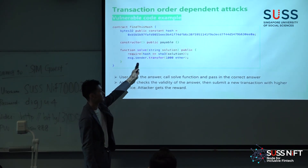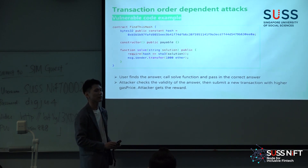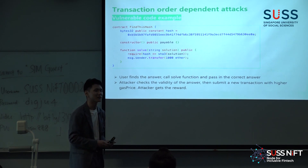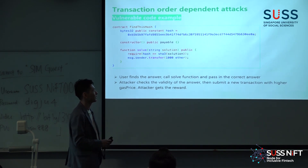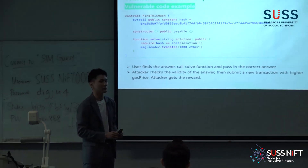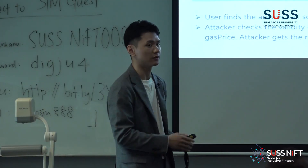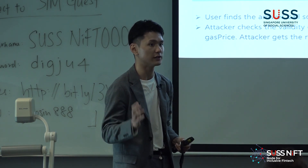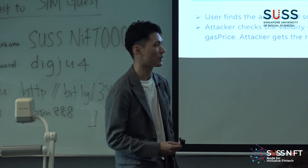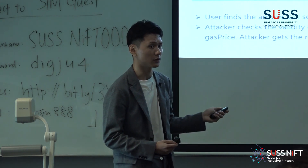A string called resolution is passed into the solve function. So for anyone observing in the mempool, he can get the plain text version of the solution and then submit his own transaction. But in the commit-reveal pattern, what if the original hard-working user signed this answer with his private key and submitted a signature? Even if an attacker submits the same function call, he cannot get the reward because the signature was signed by a different entity. The smart contract can use functions like ecrecover to verify that it's actually the original user who solved this challenge.